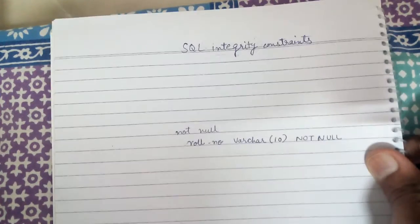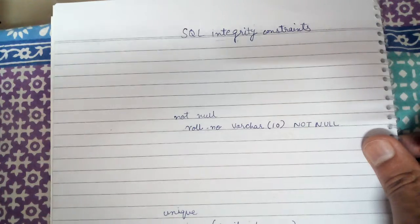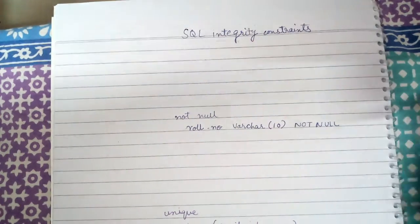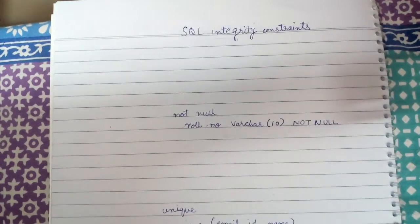Hello friends, in the last lecture we saw what SQL integrity constraints are. In this lecture we'll be looking at our first integrity constraint which is called not null.